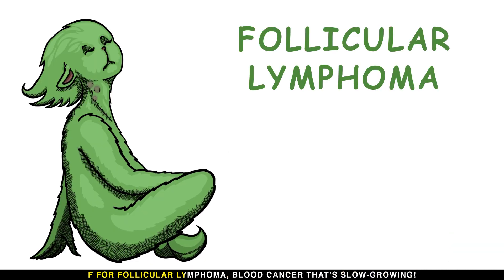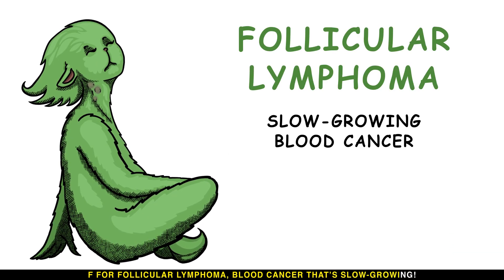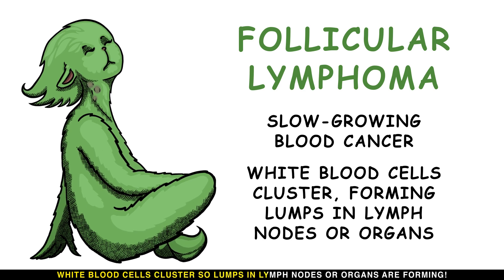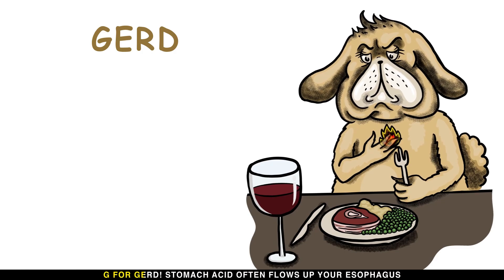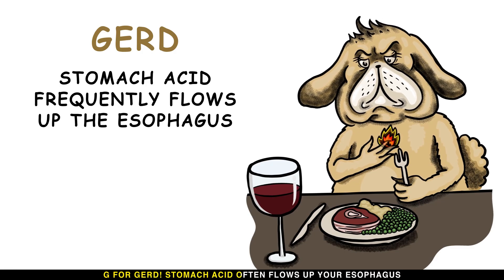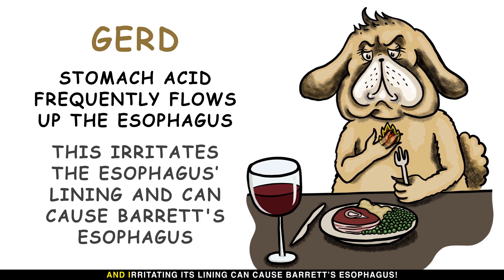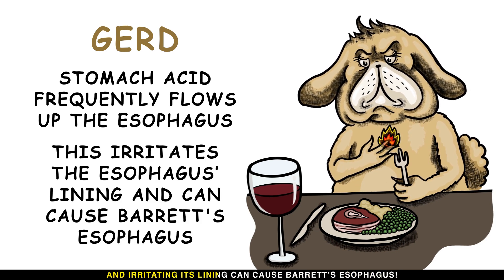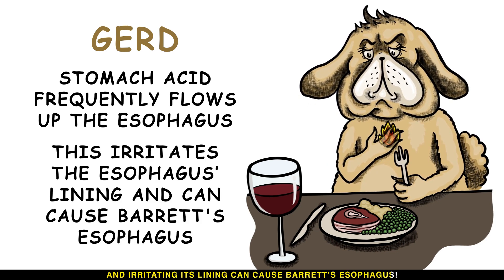F is for follicular lymphoma — a slow-growing blood cancer where white blood cells cluster, so lumps in lymph nodes or organs are forming. G is for GERD, where stomach acid often flows up the esophagus, irritating its lining and potentially causing Barrett's esophagus.